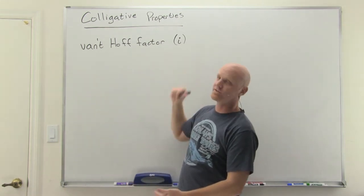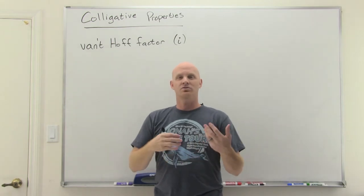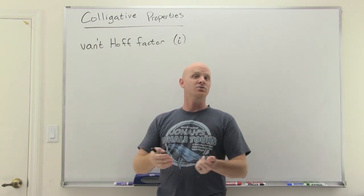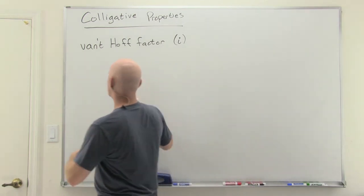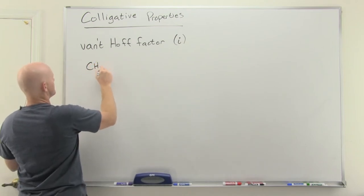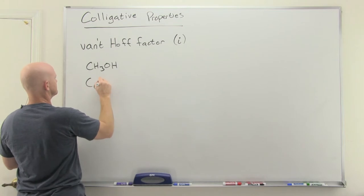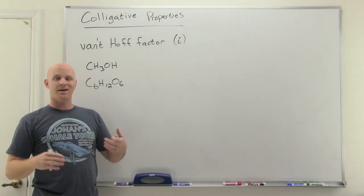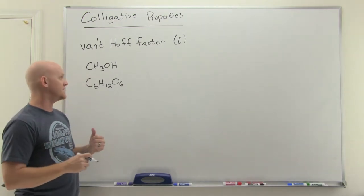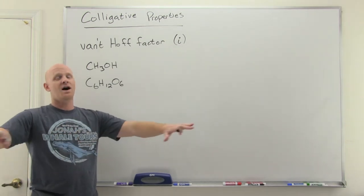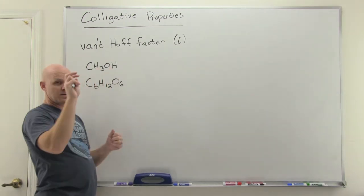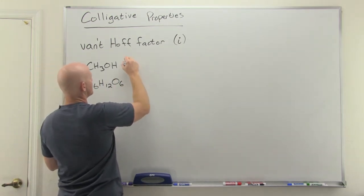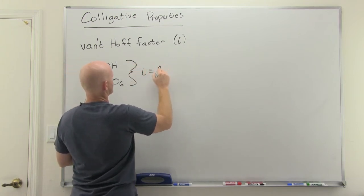The one characteristic of the solute that does matter is the Van't Hoff factor (i), which tells us how many particles a solute dissociates into. For non-electrolytes like methanol or glucose, there is no dissociation into ions, so every molecule gives one dissolved particle — the Van't Hoff factor is 1.